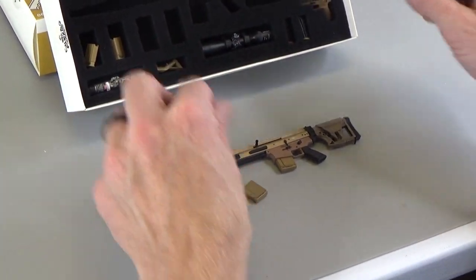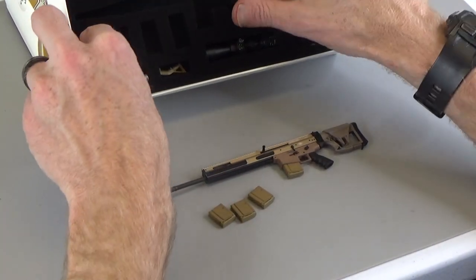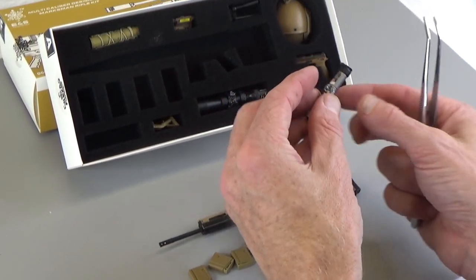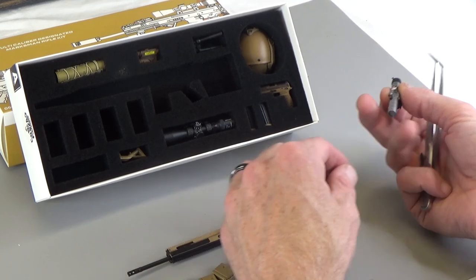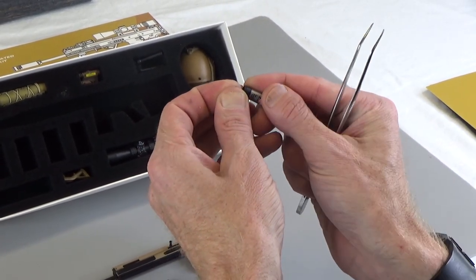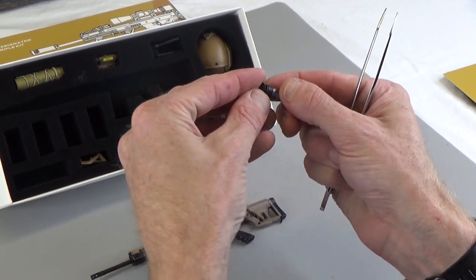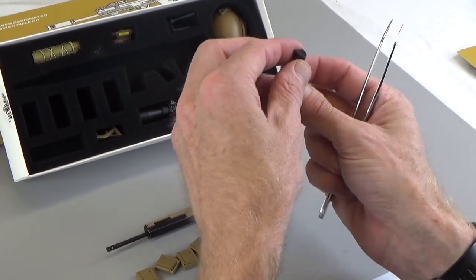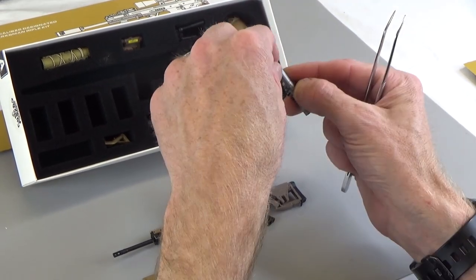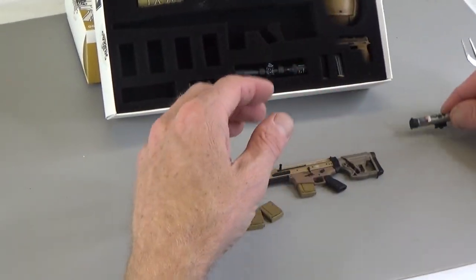So we get plenty of magazines. We get one in the gun and we got four extra. We have a laser with the door. It's not broken, don't worry. Just snaps on there. There we go. So that's a laser, will go on the side of the weapon.